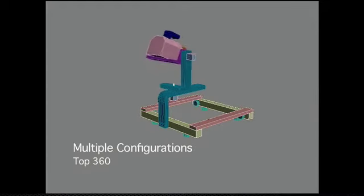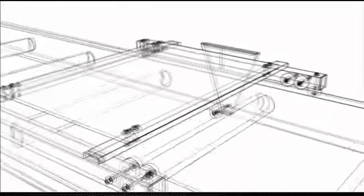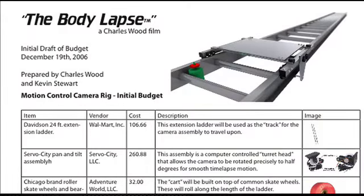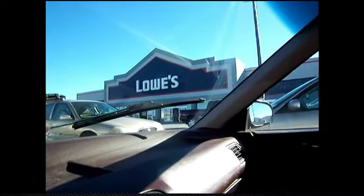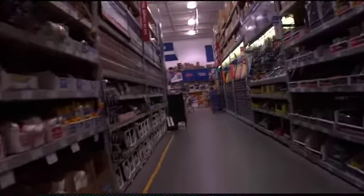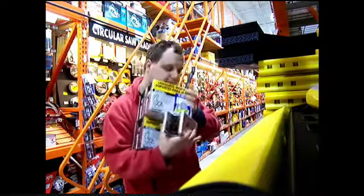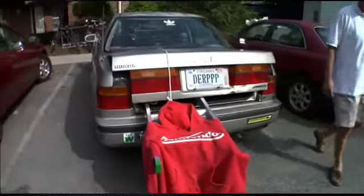This video deals with building the motion control camera. These are early tests of how this thing was going to be built. I decided early on it was going to run on a ladder to save costs — those are roller skate wheels, even though the animation looks kind of neat. This is a budget I submitted to the school for this thing, which ended up being only about $600 or $700. This is a trip to Lowe's to get the needed materials, and somehow I managed to get the ladder all the way into my tiny Honda.